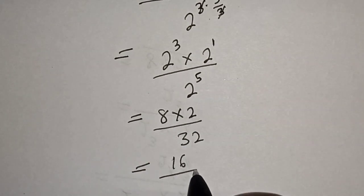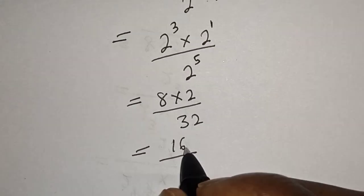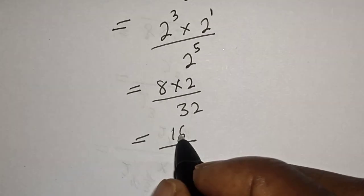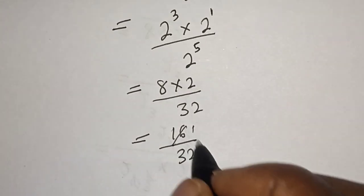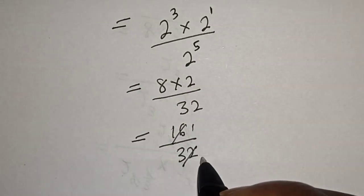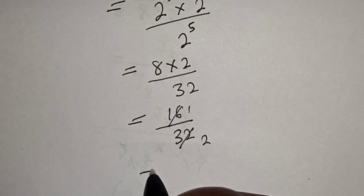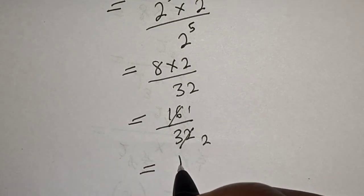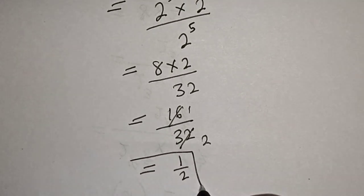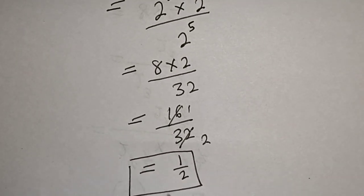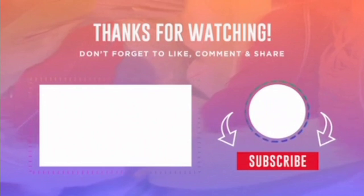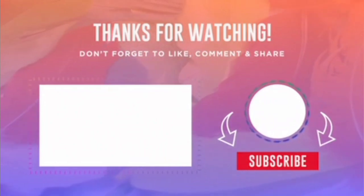This gives us 16 over 32, which simplifies to 1 over 2. That is our final answer. If you enjoyed the class, please don't forget to like, share, comment, and subscribe. Thank you.